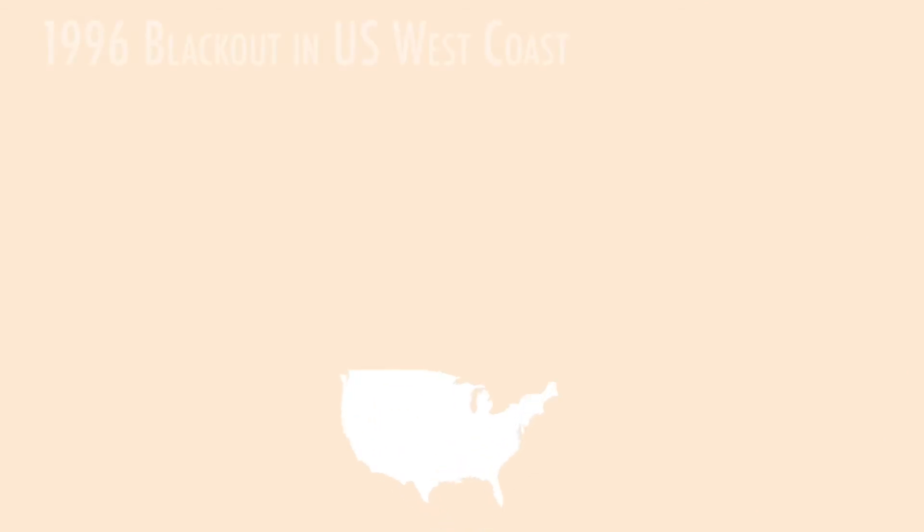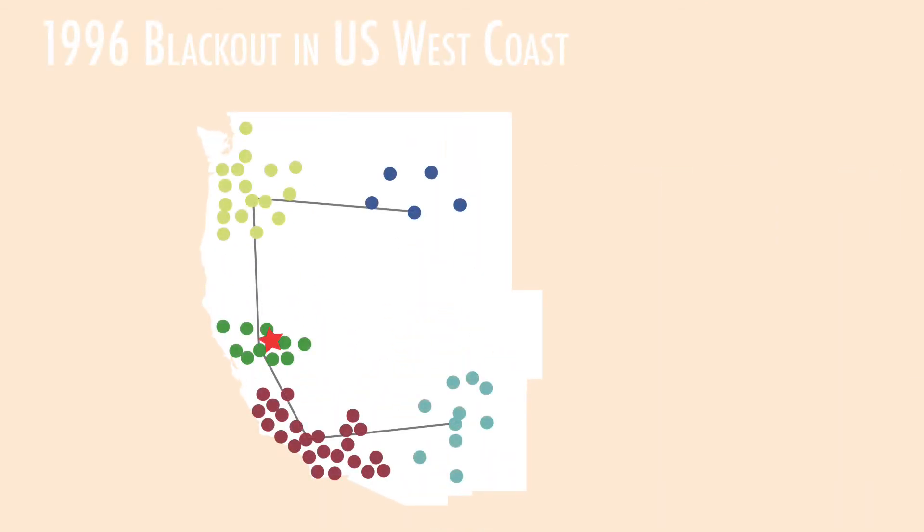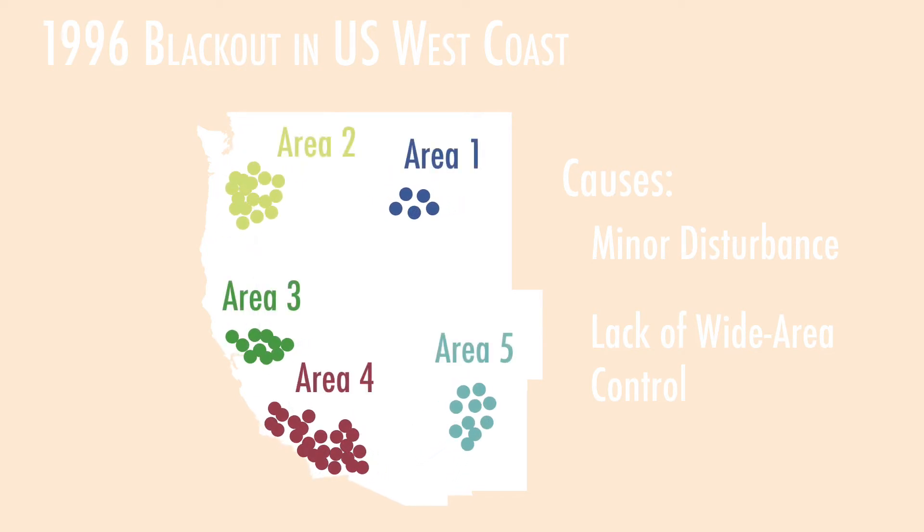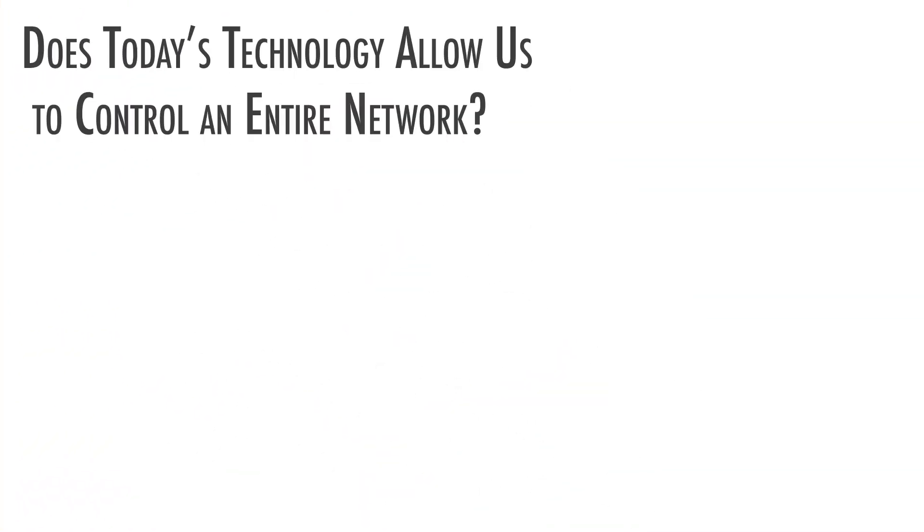For example, the 1996 power grid blackout in the U.S. West Coast was caused by a minor disturbance. What would have saved it from the catastrophe was the use of wide-area control, where different parts of the network would have been permitted to exchange state information and take coordinated control actions. The lack of global control caused these generators to oscillate as five separate groups and finally disintegrated the entire western interconnection into five separate islands.